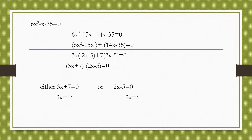If 3x plus 7 equals 0, then 3x equals minus 7, so x equals minus 7 by 3. Similarly, 2x minus 5 equals 0 gives 2x equals 5, so x equals 5 by 2. Therefore the roots of the given equation are x equal to minus 7 by 3 and 5 by 2, which satisfy the given equation.